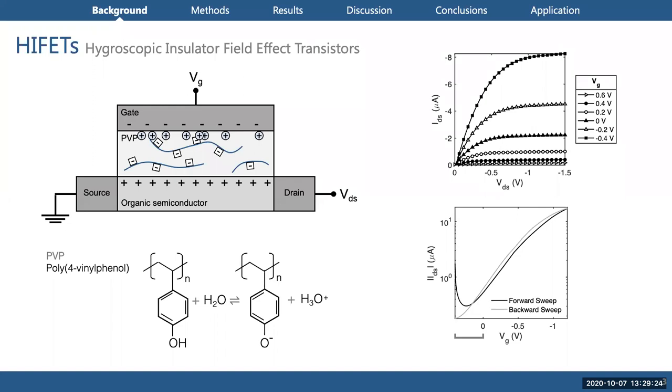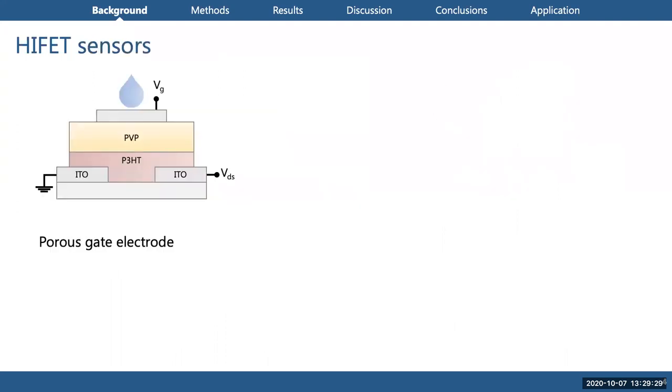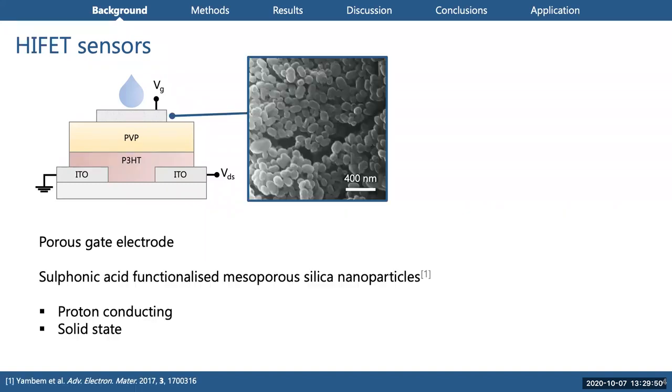To use these HIFET devices as sensors, there has to be some way for an analyte to interact with the device. One way to do this is to use a porous top gate electrode. This allows the analyte to penetrate into the device, and by either changing the capacitance or by doping the semiconductor layer, perhaps this will modulate the channel current which we can then detect.